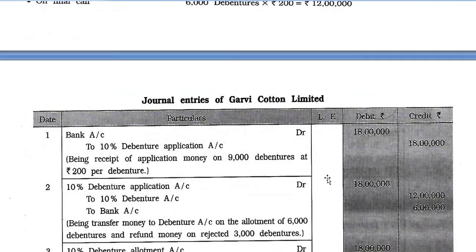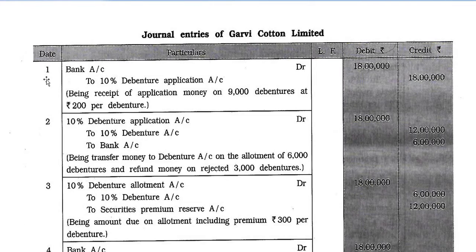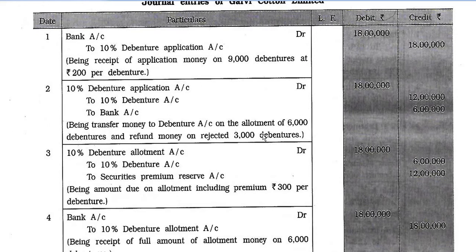Journal entries of Garbi Cotton Ltd. Entry 1: Bank account debit Rs. 18,00,000 to 10% Debenture Application account Rs. 18,00,000 — being receipt of application money on 9,000 debentures at Rs. 200 per debenture. Entry 2: 10% Debenture Application account Rs. 18,00,000 to 10% Debenture account Rs. 12,00,000 and to Bank account Rs. 6,00,000 — being transfer to debenture account on allotment of 6,000 debentures and refund on rejected 3,000 debentures.